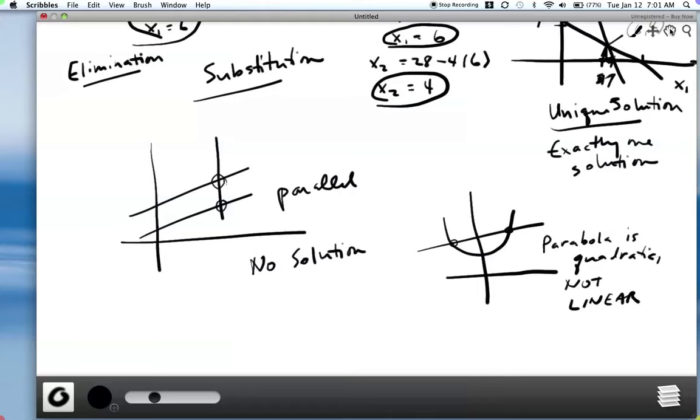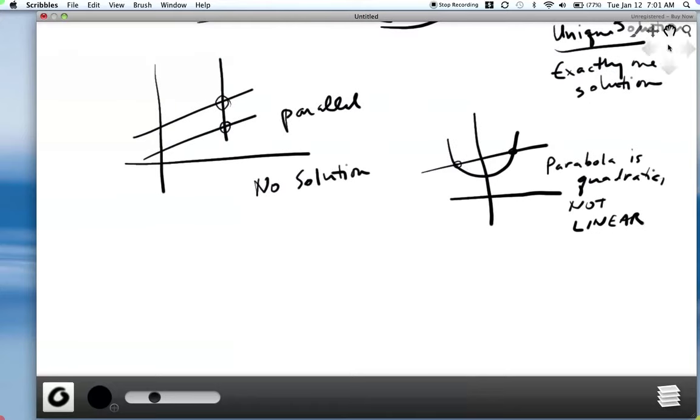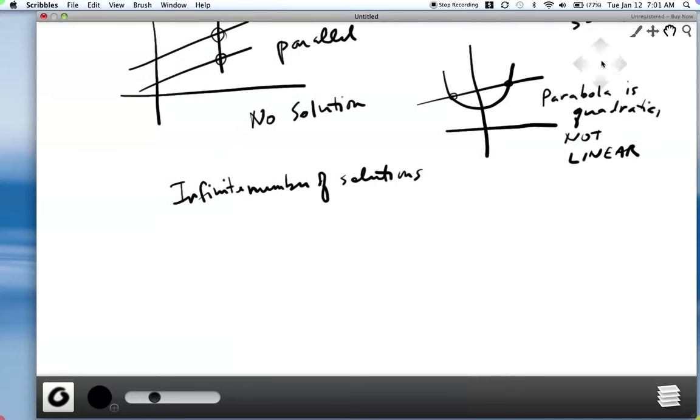So it turns out that if you have a system of linear equations and you don't have no solution, you don't have exactly one solution, then you must have an infinite number of solutions. So infinite number of solutions. And in two dimensions, that's a little bit tough to come up with a good example. The best you can do in two dimensions is one like this, where you have something like 2x1 plus 3x2 equals 10, and then maybe 4x1 plus 6x2 equals 20.